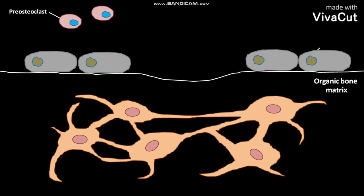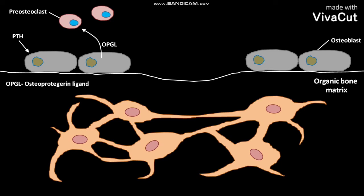These are the osteoblasts which continuously deposit bones. The parathyroid hormone or PTH binds to the receptors on the osteoblast. As a result, the osteoblasts release cytokines like OPGL. OPGL stands for osteoprotegorine ligand, and is also called RANK ligand, which stands for receptor activator of NF-kappa-B ligand.